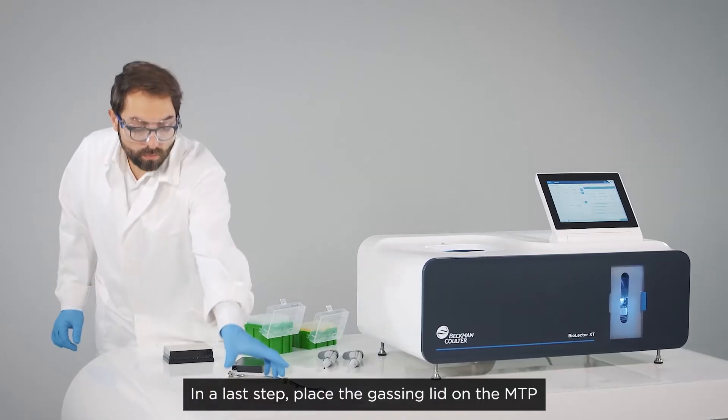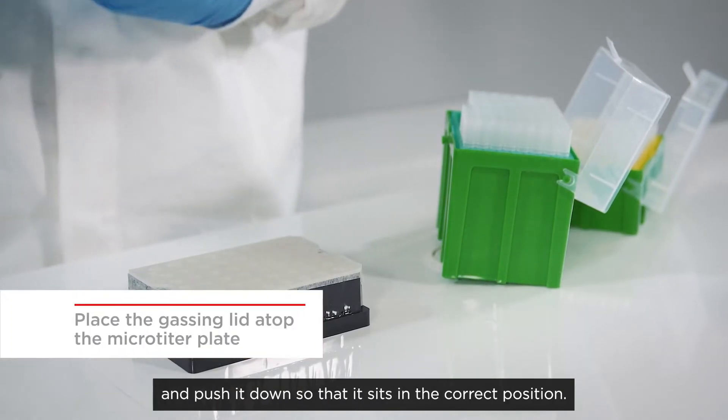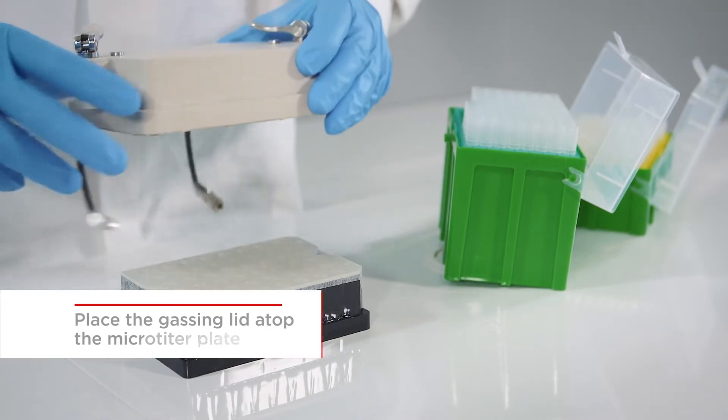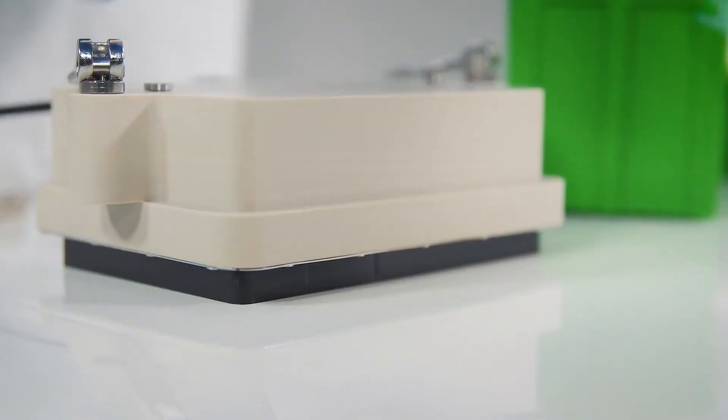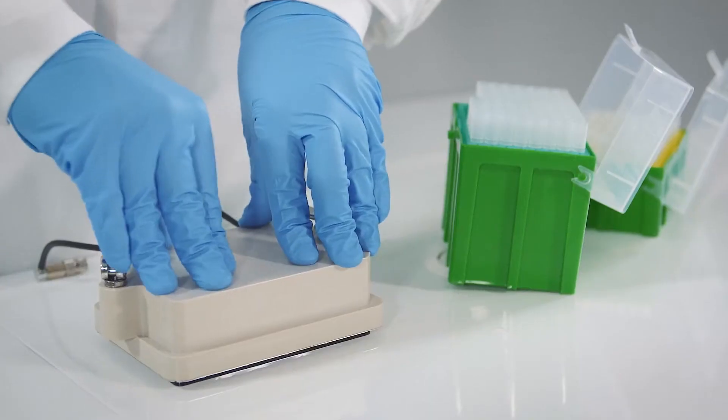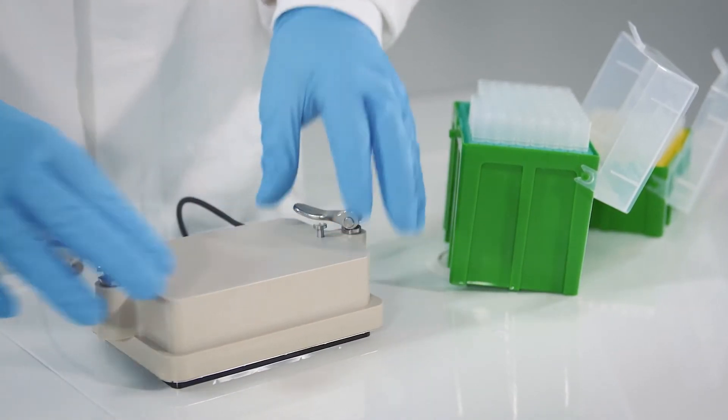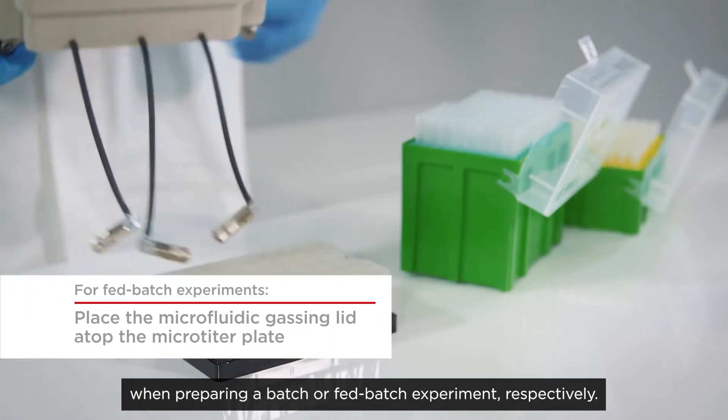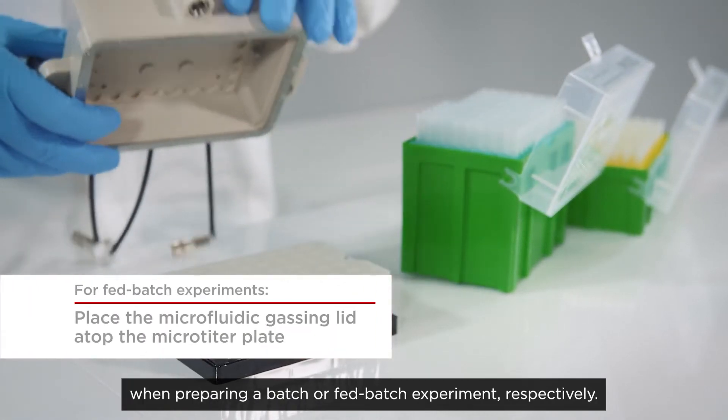In a last step, place the gassing lid on the MTP and push it down so that it sits in the correct position. Make sure to use the correct gassing lid when preparing a batch or fed-batch experiment, respectively.